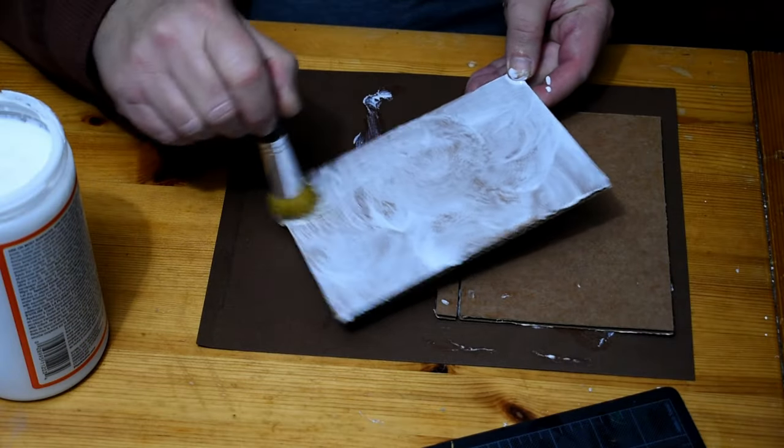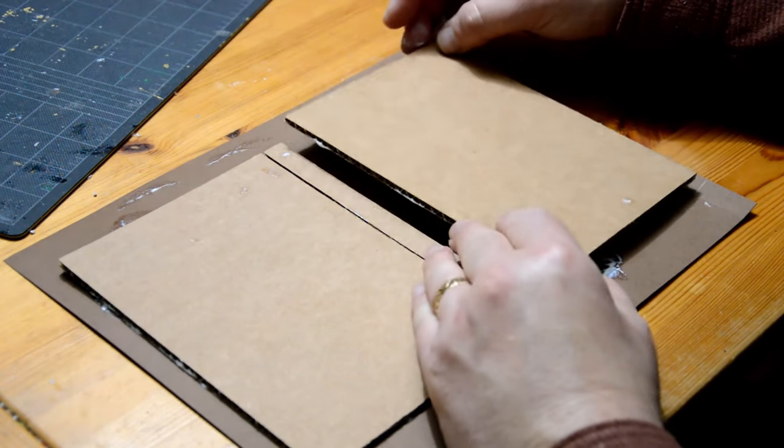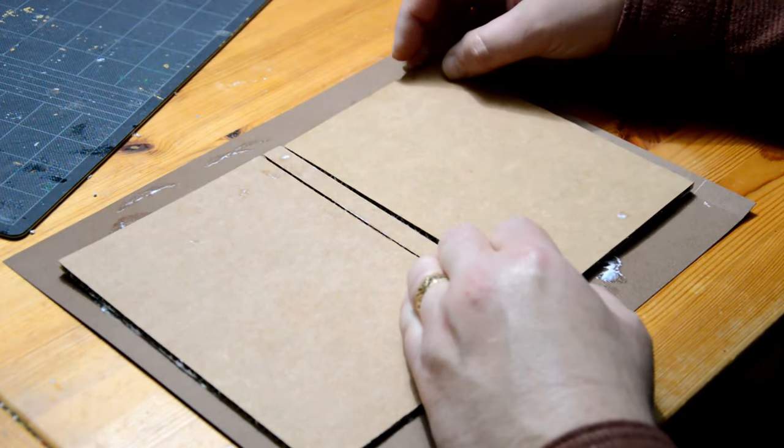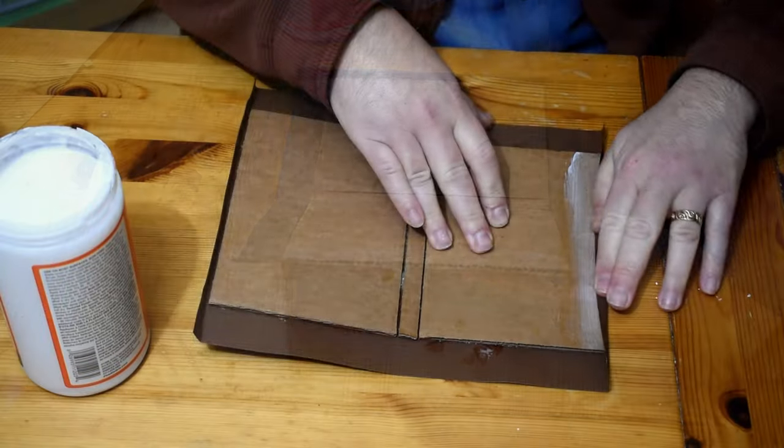And then as you can see, there are going to be two cover pieces and a spine. The only real trick here is to make sure that the pieces are straight in relation to each other, and that you leave a little gap to allow the cover to bend when you're done.